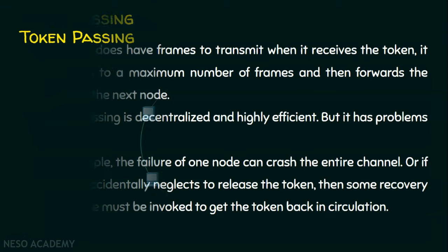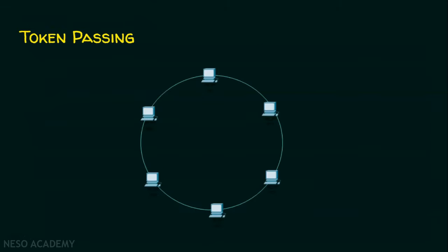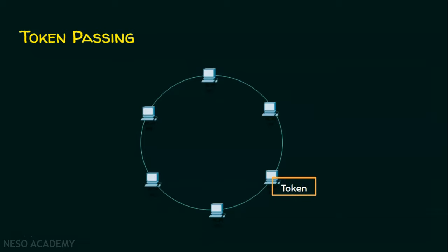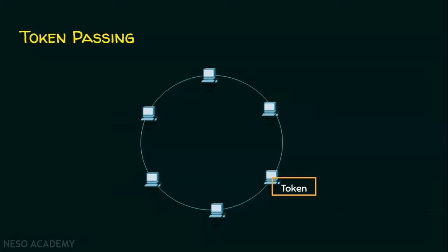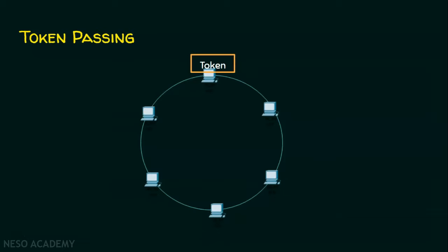Let's see an animation. In this example, I have taken a ring topology. Token passing scheme need not be only ring topology. The node which holds the token is the only one that can send the data. This token has to be circulated to the other nodes, and whoever is holding the token, it's that computer's turn to send the data.